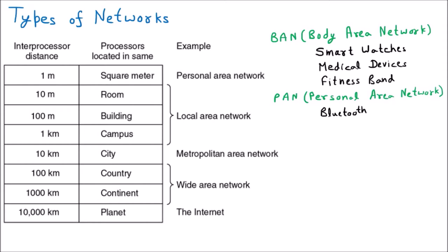TV remotes or woofers connected with your mobile via Bluetooth — that particular smallest network is the Personal Area Network. There is also a table mentioning the distance and specific name or location and examples. Personal Area Network is in the square meter range — very small. Starting from 1 meter up to 10 meters is the range of PAN.